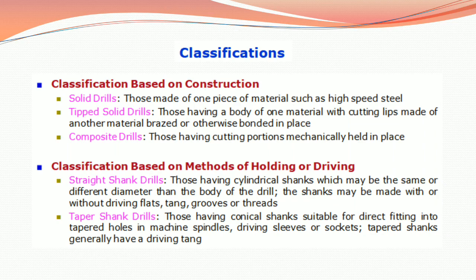Classification based on methods of holding or driving. First, straight shank drills: those having cylindrical shanks which may be the same or different diameter than the body of the drill; the shanks may be made with or without driving flats, shank grooves, or threads. Next, tapered shank drills: those having conical shanks suitable for direct fitting into tapered holes in machine spindles, driving sleeves, or sockets; the taper shanks generally have a driving tang.